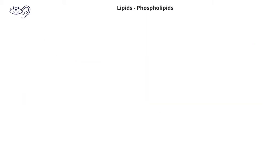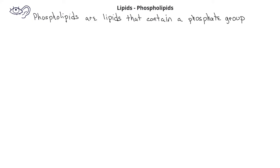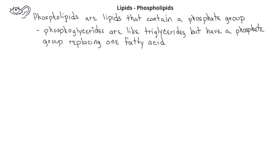Another common type of lipid is known as a phospholipid. Phospholipids are lipids that contain a phosphate group. One of the most common examples of phospholipids are the phosphoglycerides, which are similar to triglycerides, except they have a phosphate group replacing one of the fatty acid components.